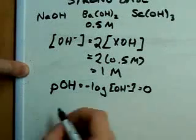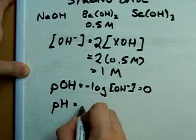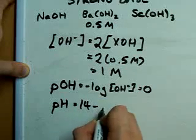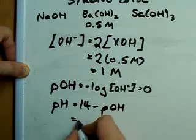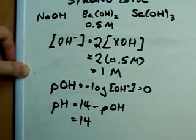And the way you calculate pH from POH is to subtract it from 14. Or, in this case, the pH is actually 14, which seems very high.